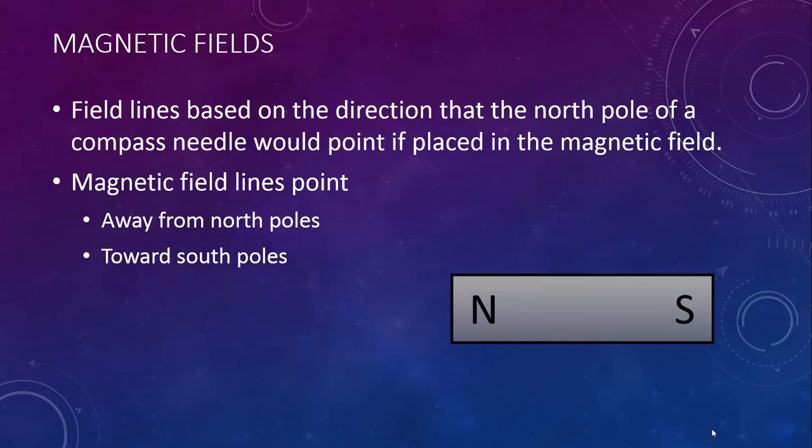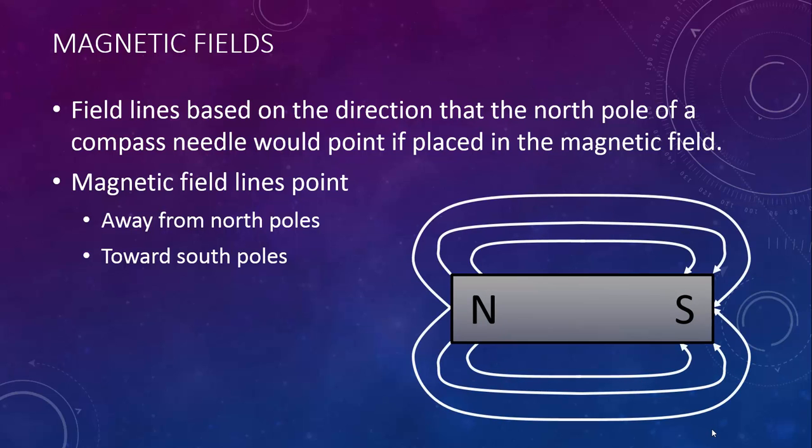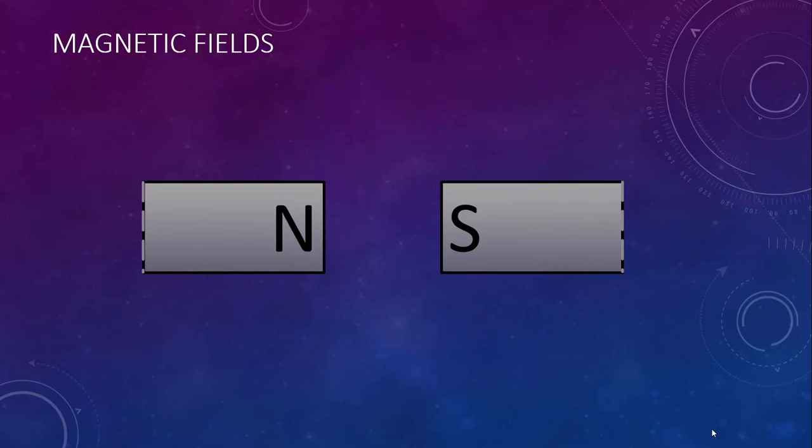The magnetic field around a bar magnet looks like this. The magnetic field between the north pole of one magnet and the south pole of another magnet would look like this.